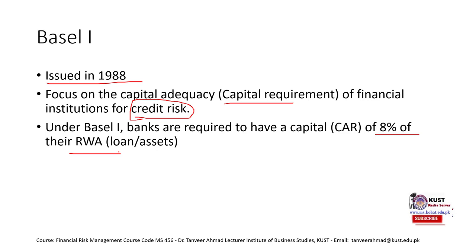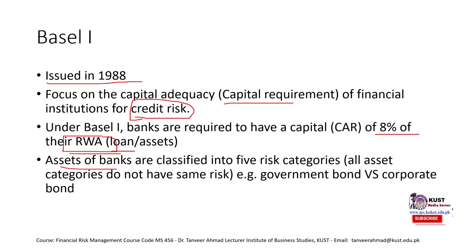Under Basel I, banks are required to maintain a Capital Adequacy Ratio of eight percent on their Risk Weighted Assets (RWA). This eight percent is not of total assets, but of the risk-weighted assets. Basel I divided the assets — meaning the loans of the bank — into five categories, because each category does not carry the same amount of risk.